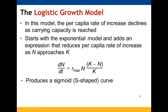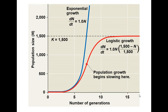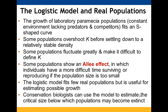With the logistic growth model, the rate of increase decreases as the population approaches carrying capacity K. Taking the exponential model and accounting for this slowing produces a sigmoid, S-shaped curve. The graph shows exponential growth in blue and logistic growth in red. As we approach the K value, the population is still growing, but the rate of growth is decreasing.